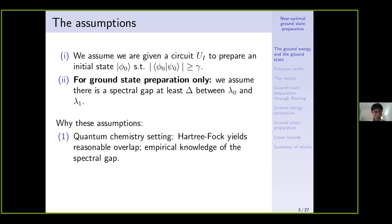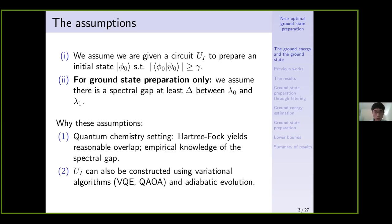These assumptions are reasonable in many interesting settings. For example, in a quantum chemistry setting, there is a method called Hartree-Fock which produces an approximate ground state in the form of a single Slater determinant. Because it's a single Slater determinant, it can be efficiently prepared using a quantum circuit, and it usually has a pretty good overlap with the exact ground state if the system size is not too large. We also usually have empirical knowledge of the spectral gap through classical simulation or experiments. Some other ways to construct U_I include variational algorithms such as VQE and QAOA, and adiabatic evolution.